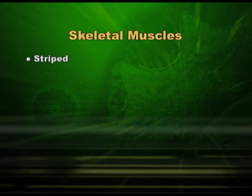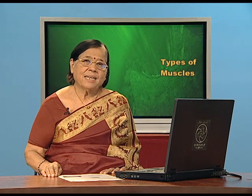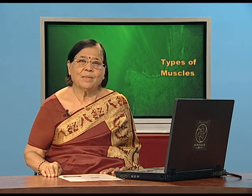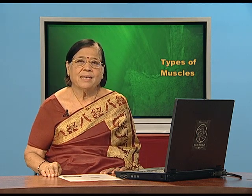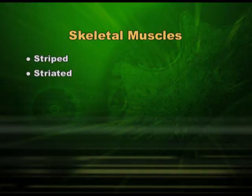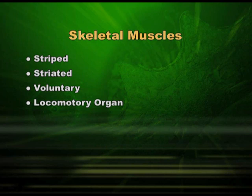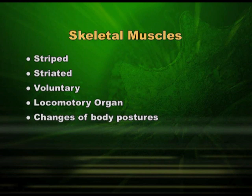Because striations are seen, sometimes we call it striated muscle as well. So skeletal muscle will be striated or striped — that is one feature. It is voluntary in nature, and that is why it is found in locomotory organs which help in change of position.